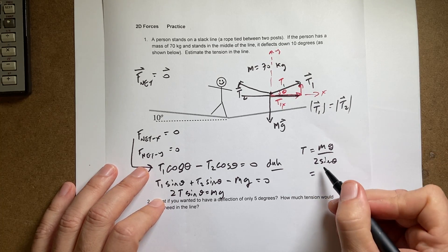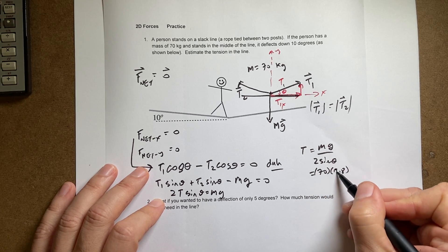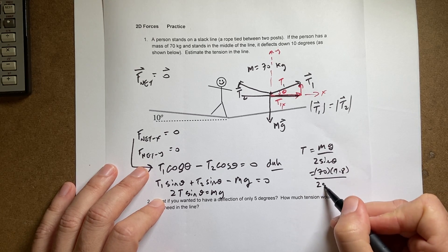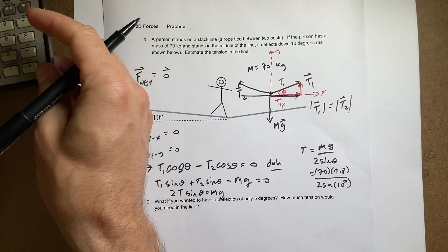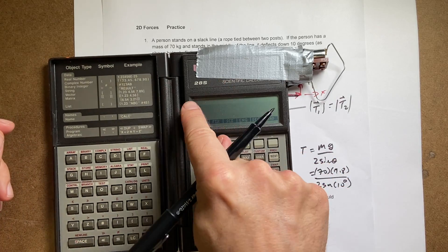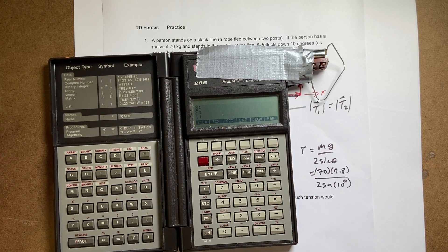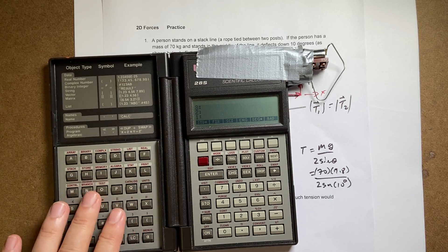So now we're going to put our values in. I have 70, g is 9.8 newtons per kilogram, 2 times sine of 10 degrees. And I brought my antique calculator right here. Let's see if it works. Okay, so this is the HP28s. This is actually my calculator from college. I thought it was really cool at the time. I never actually did any programming over here.